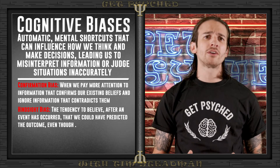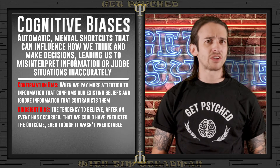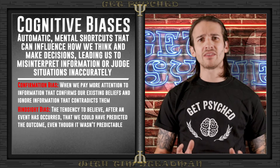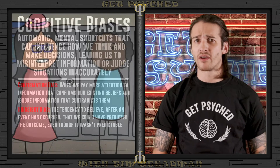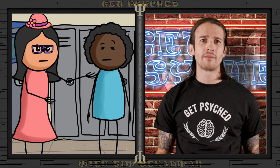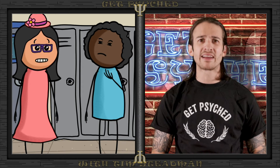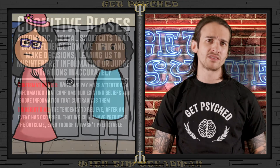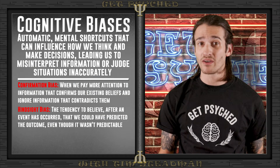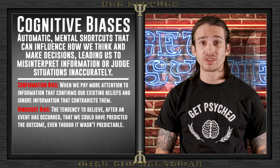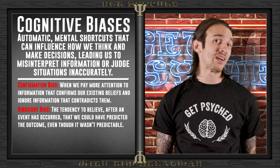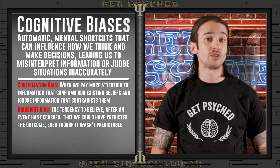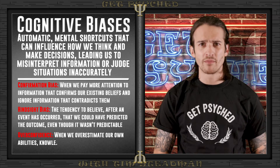Hindsight bias, or the 'I knew it all along' effect, occurs when we believe after an event has occurred that we had accurately predicted it, even though there was no real evidence beforehand. Kevin's friends might fall into this bias by believing they could have foreseen him quitting, pointing to small signs like times Kevin seemed distracted or commented about feeling stressed. Viewing these as warnings they missed could make them feel less sympathetic, or even betrayed or annoyed.